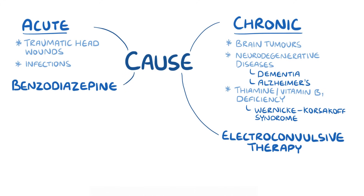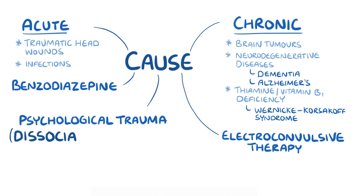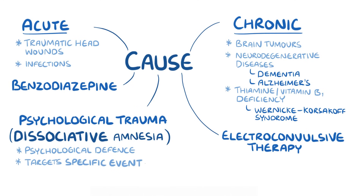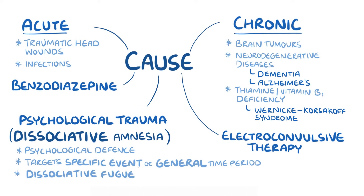Besides brain injury or illness, retrograde amnesia can result from psychological trauma, in which case it is termed dissociative amnesia. It's unclear how psychological trauma causes retrograde amnesia, but it's thought that perhaps forgetting traumatic events is a psychological defence against the distress they can cause. Sometimes dissociative amnesia targets a specific memory, like a specific violent event, whereas other times it can be more general, wiping out whole decades of memories. Sometimes dissociative amnesia is accompanied by dissociative fugue, where a person suddenly wanders away from their home or community without a clear memory of having done that.